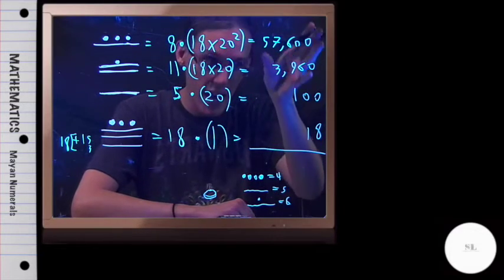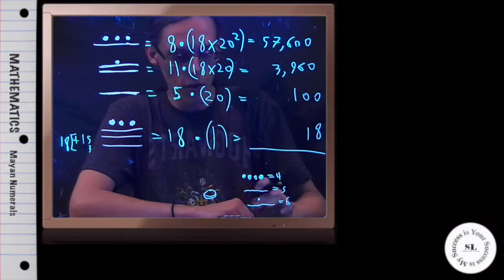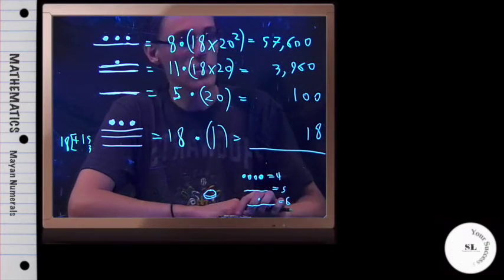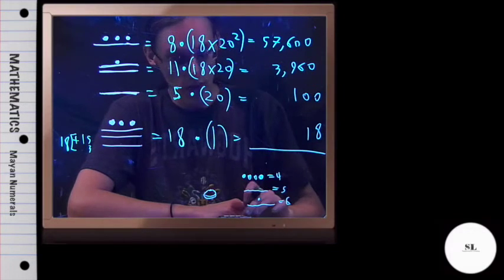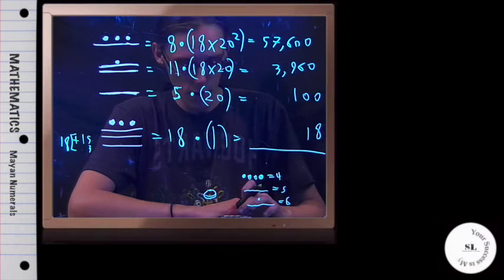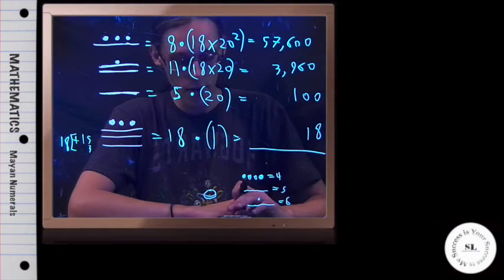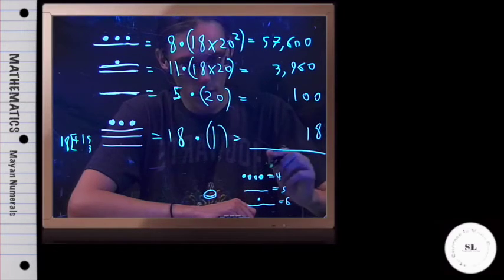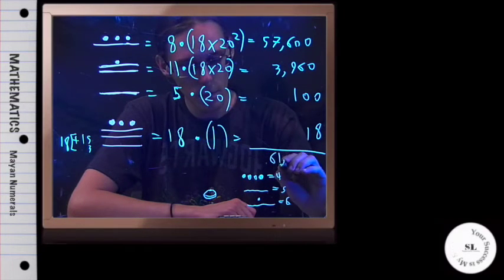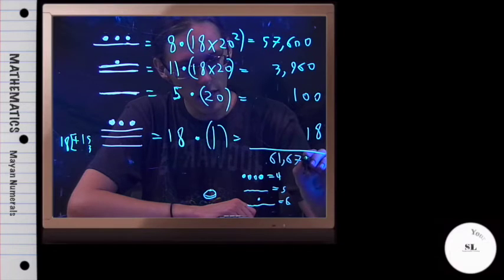So now I'm going to add these numbers up. So I'll go ahead and just type it in since the calculator is right here, but you could add this old-fashioned way. So I get 57,600 plus 3,960 plus 100 plus 18. And so I'm getting 61,678.